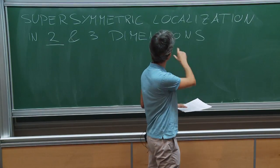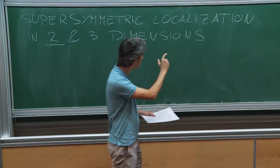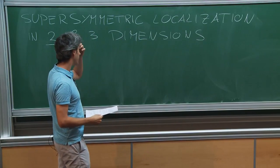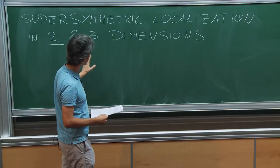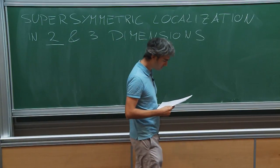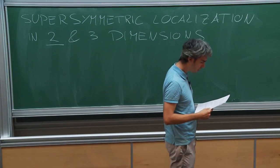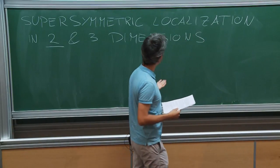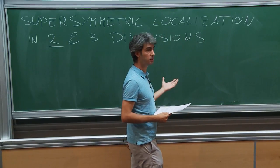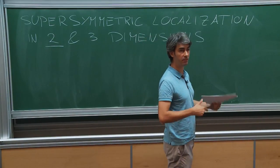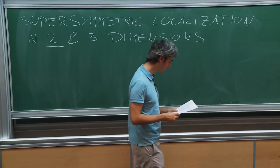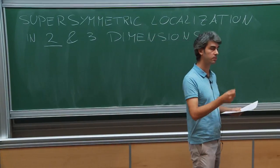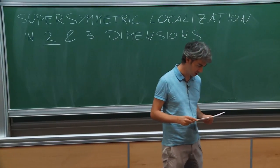These are very powerful techniques. In this very week, there is another set of lectures that discuss localization in four dimensions by Wolfger. These techniques are very powerful because they allow us to reduce an infinite dimensional integral, which is the path integral, to something much simpler — to some finite dimensional integral, or to some counting problem, to some series, and so on.